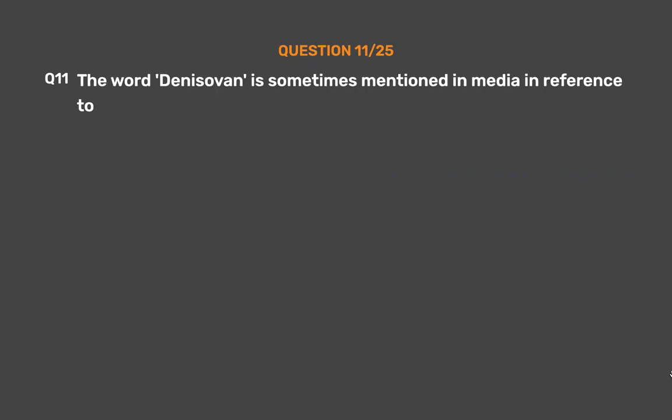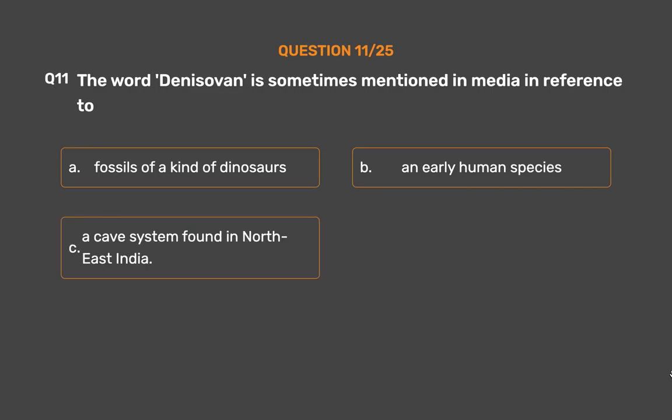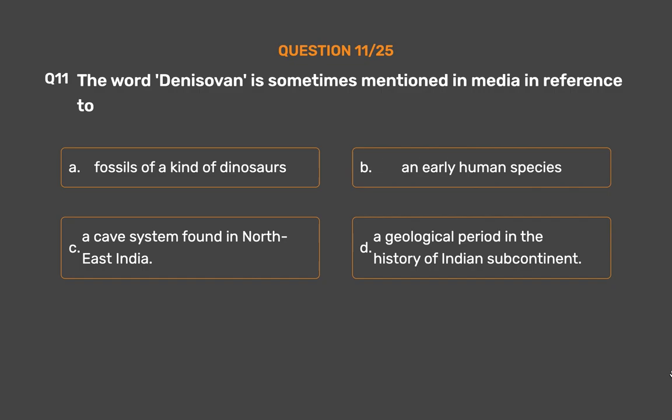Question No. 11: The word 'Denisovan' is sometimes mentioned in the media in reference to ___. Option A: Fossils of a kind of dinosaur. Option B: An early human species. Option C: A cave system found in Northeast India. Option D: A geological period in the history of the Indian subcontinent.